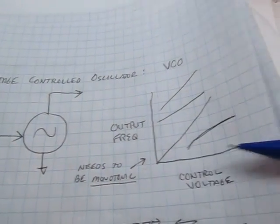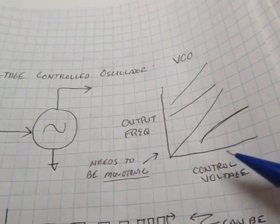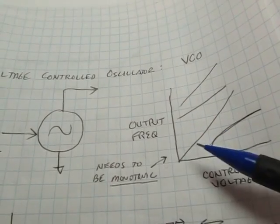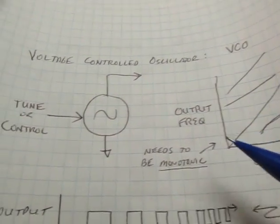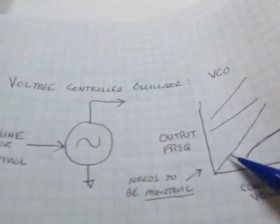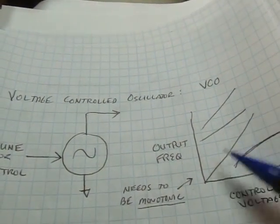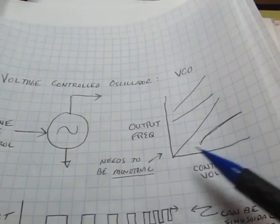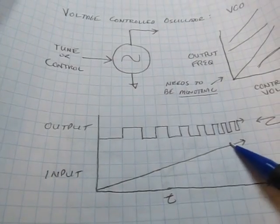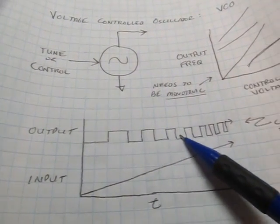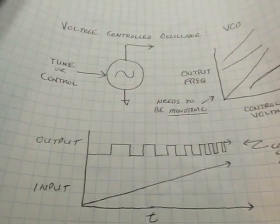The VCO can have a number of different characteristics. The control voltage can be moved up or down, and the output frequency can be perfectly linear, have some offset, or even have a curve. The important thing is that it needs to be monotonic over the range where it's going to be used inside the loop, meaning the slope always has to be positive. If the control input voltage goes up linearly over time, then the output frequency would get faster and faster. That's a simple way to think about a VCO.